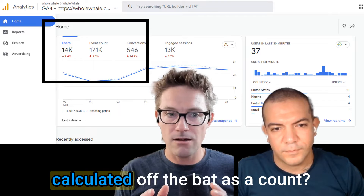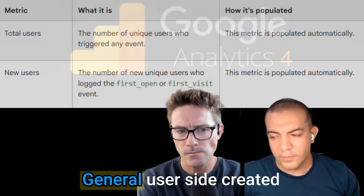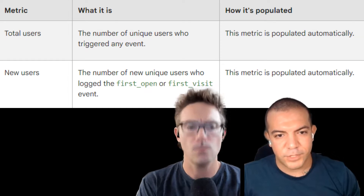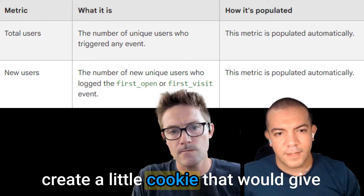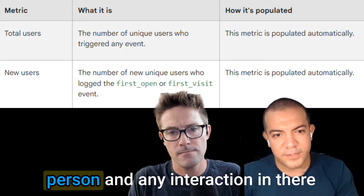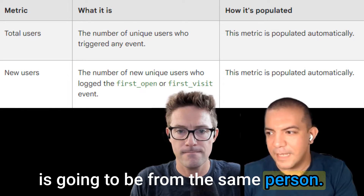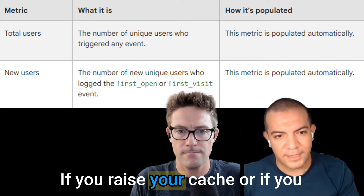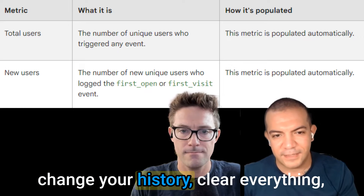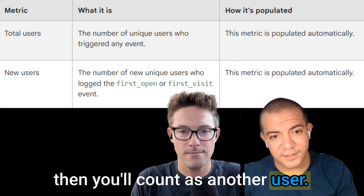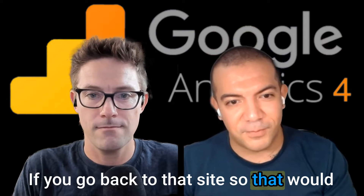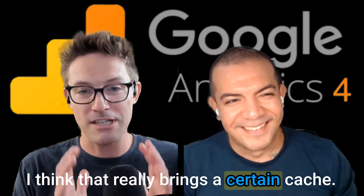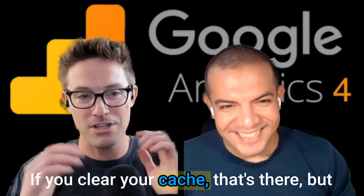I have begun to trust users, but just quickly — how are users calculated? Off the bat, as a count. Generally, Google Analytics will create a little cookie that gives it a sense of 'this is going to be a person,' and any interaction in there is going to be from the same person. That's the main base of how users get calculated. If you clear your cache or clear your history, you'll count as another user if you go back to that site — so that would be two users.